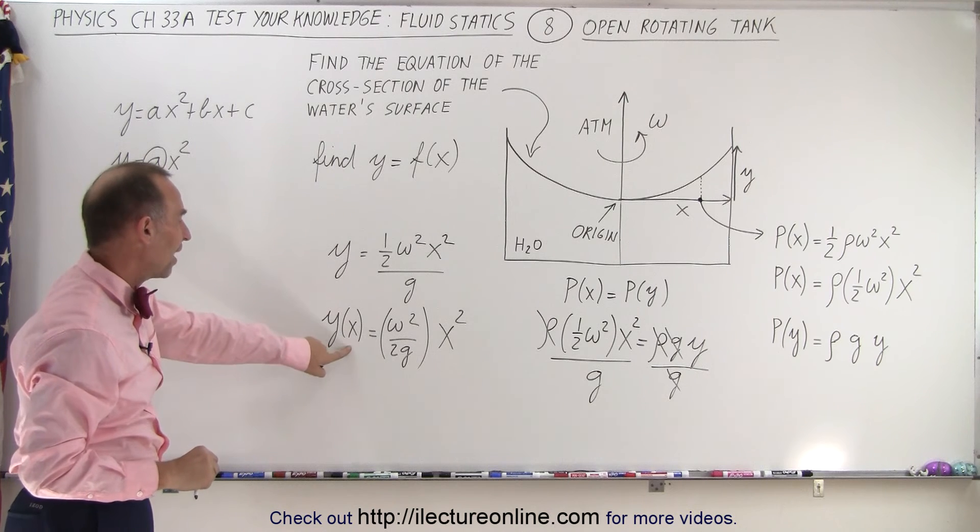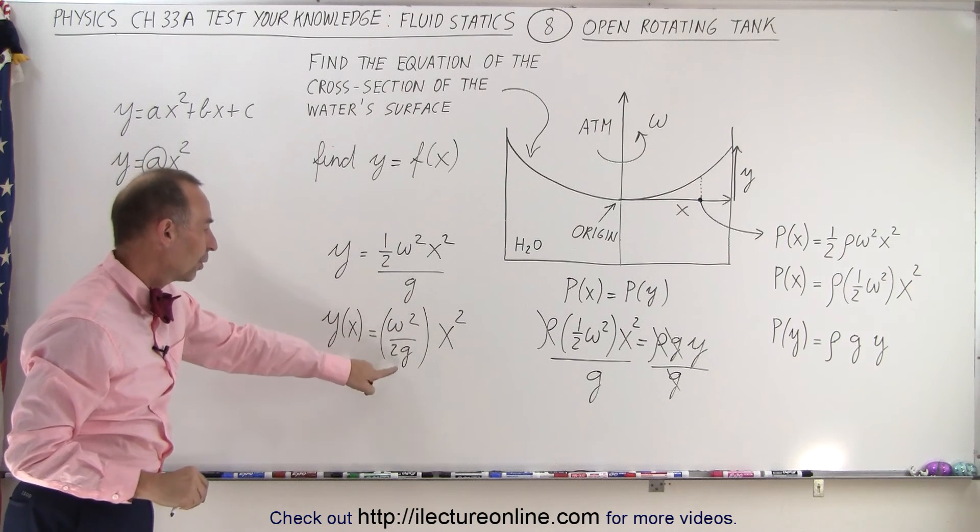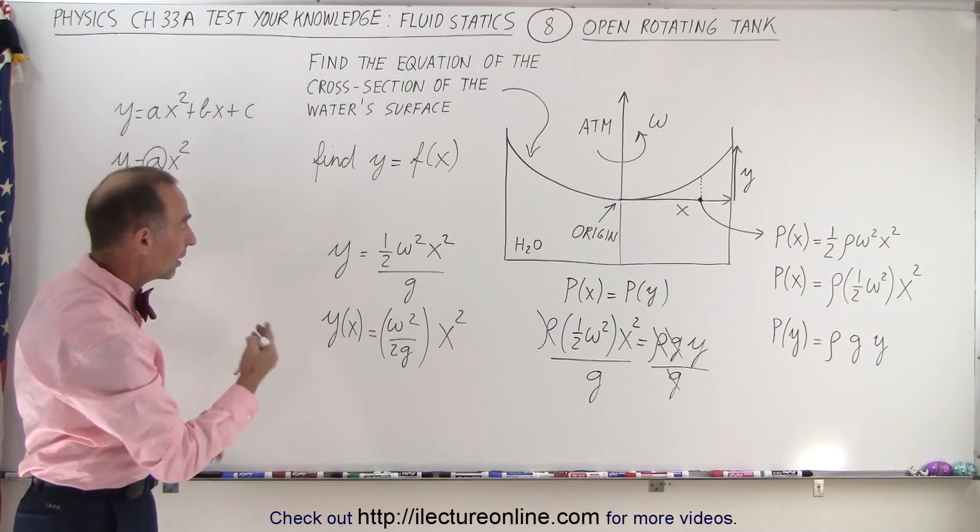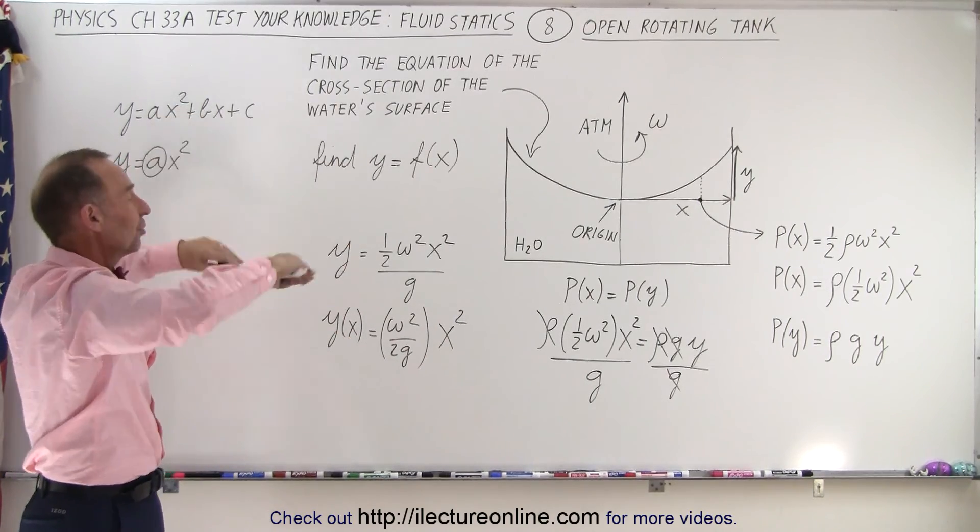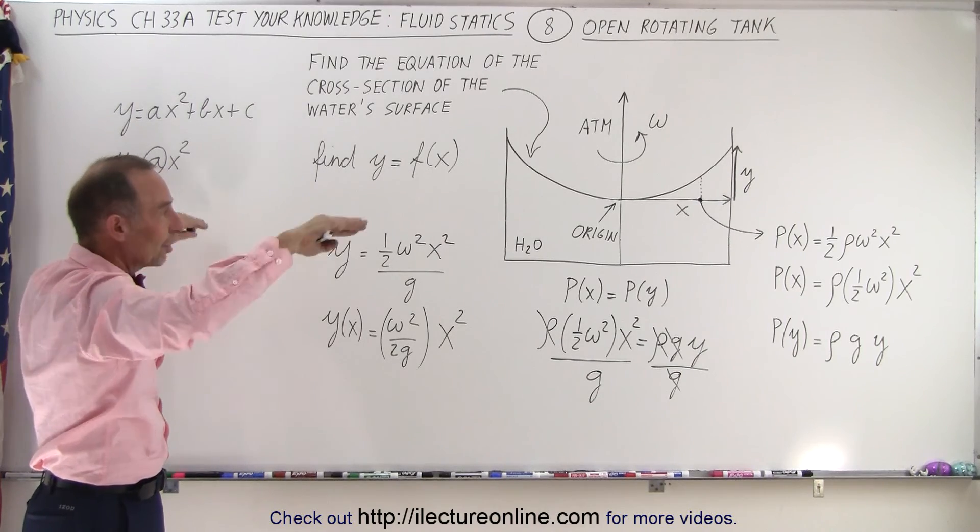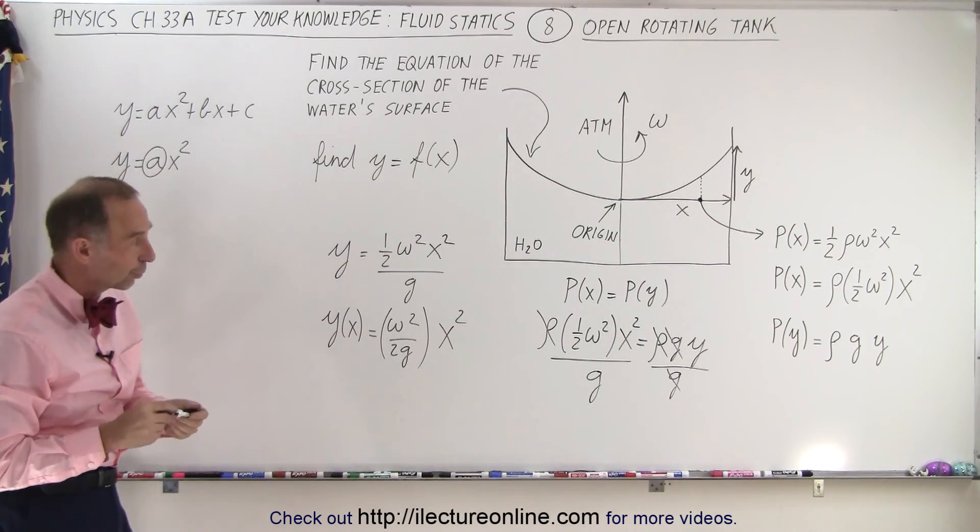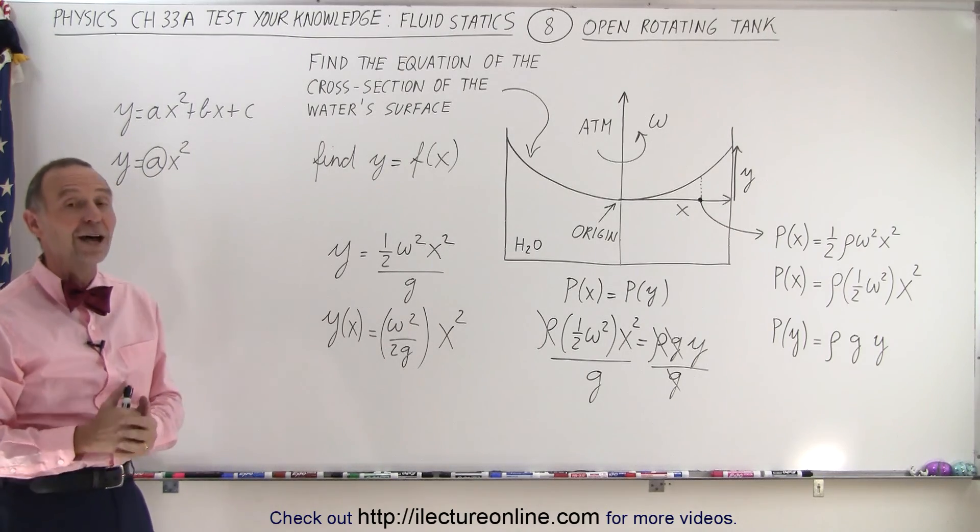And the quadratic equation is defined by the constant omega squared over 2g times x squared. So the faster it rotates, the greater the bulging will be, the slower it rotates, the less the bulging will be. So the shape of the quadratic equation will definitely depend upon how fast the tank is rotating. And that is how that is done.